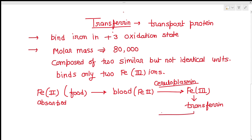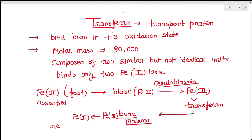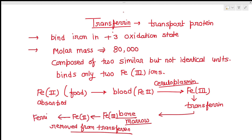Fe³⁺ then binds to transferrin and is transported to bone marrow. In bone marrow, the iron in Fe³⁺ form is converted back to Fe²⁺. Since transferrin cannot bind Fe²⁺, the iron is removed from transferrin and stored in the form of ferritin. From there it can be used to synthesize other iron compounds like hemoglobin, myoglobin, and cytoglobin.